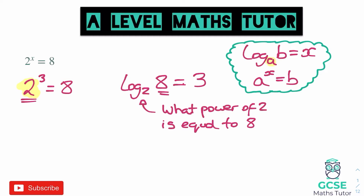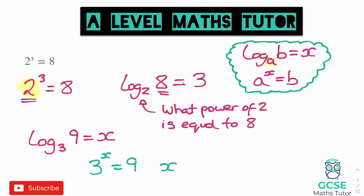Let's think about a different example. Rather than writing it as a power, we could say log base 3. So what power of 3 gives us the answer 9? We'll write log base 3 of 9 equals x, and I might ask you to find the value of x. We would say: 3 to the power of something equals 9. What power of 3 gives us 9? We know that it's 3 squared that equals 9, so x equals 2. Or we could say log base 3 of 9 equals 2.